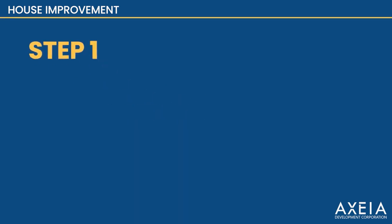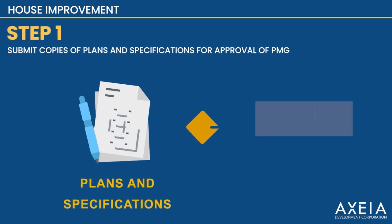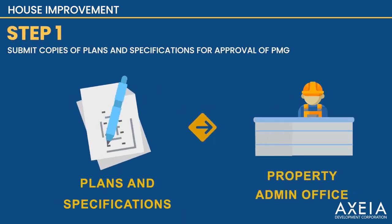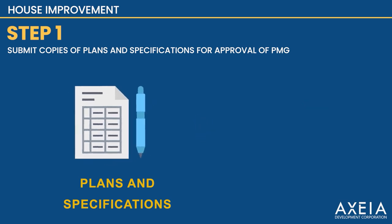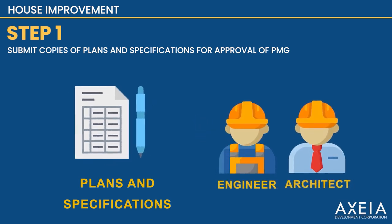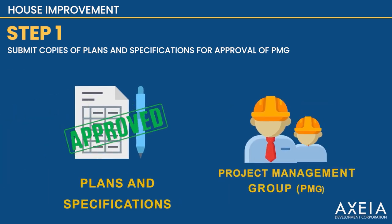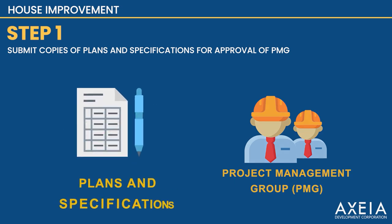Step 1. Go to the Property Admin Office and submit two copies of plans and specifications signed either by an engineer or architect. These plans and specifications will be submitted for approval by the AXEA Project Management Group, which takes 3 to 5 days.